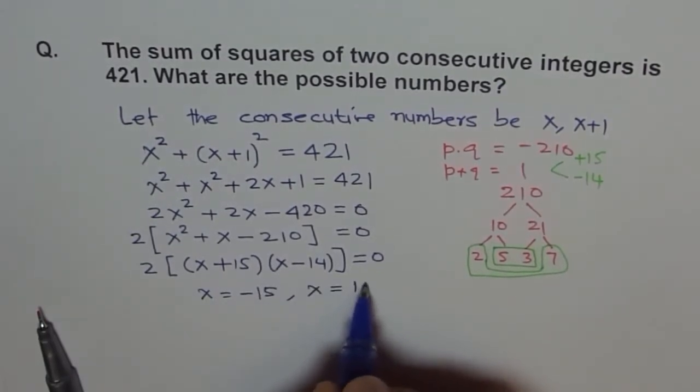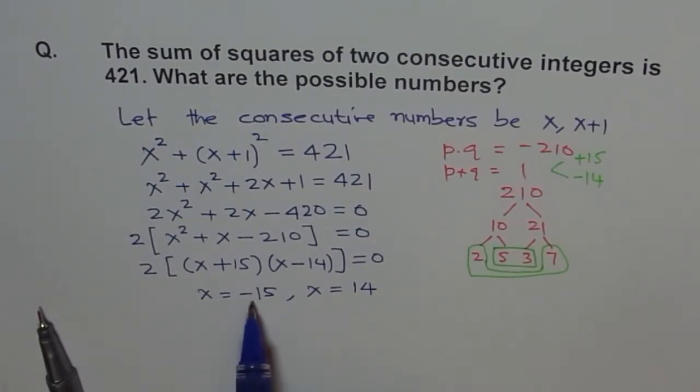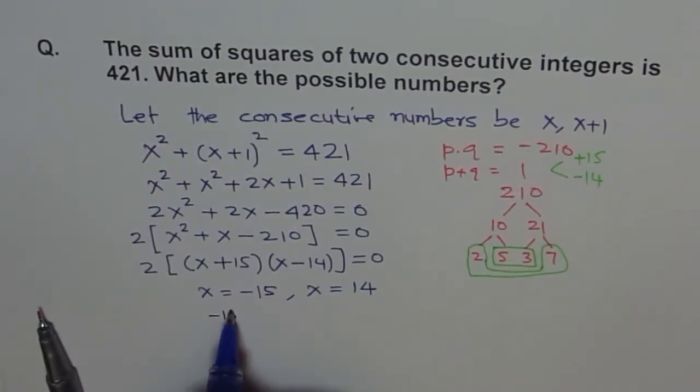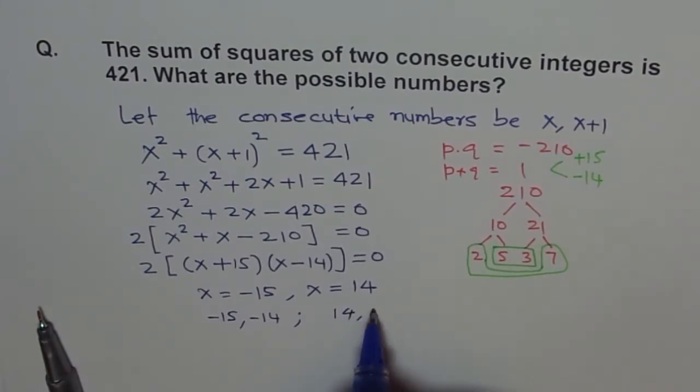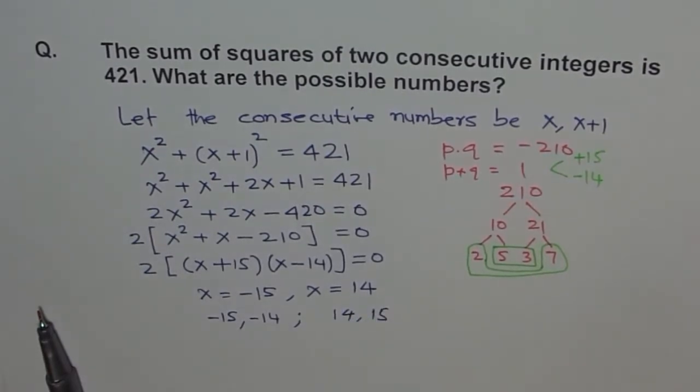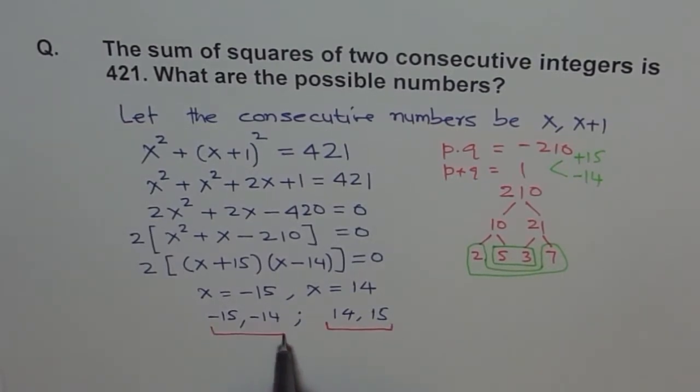So the two consecutive numbers which we are looking for are either starting with minus 15 or starting with 14. So the two sets could be minus 15 and plus 1 is minus 14. This is one set of numbers. Or we have numbers 14 and 15. So these are our two possible answers.